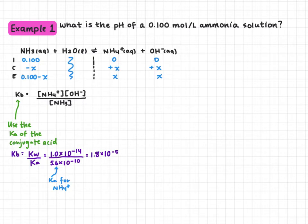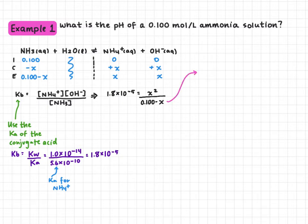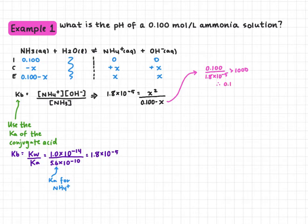We can now plug our numbers into our Kb expression. We'll have X squared on top from our products and 0.1 minus X on the bottom. We want to simplify this, so we do the same approximation test we did with weak acids — take the initial concentration of the base, 0.1, and divide it by Kb, 1.8 × 10⁻⁵. This is greater than 1000, so we can say 0.1 minus X is approximately equal to 0.1, giving us: 1.8 × 10⁻⁵ = X² / 0.1.